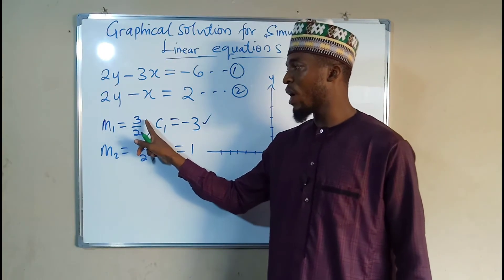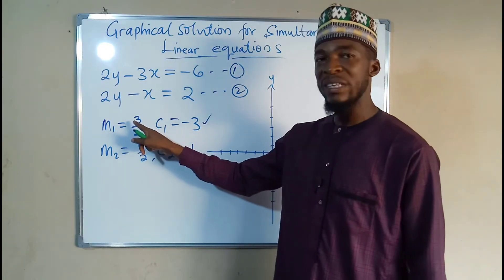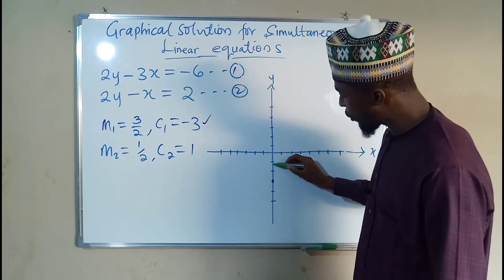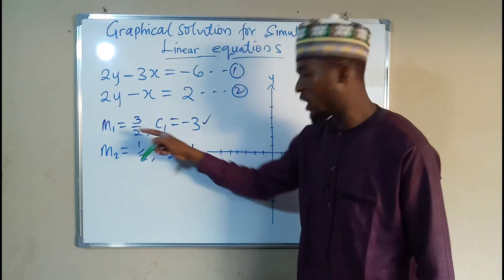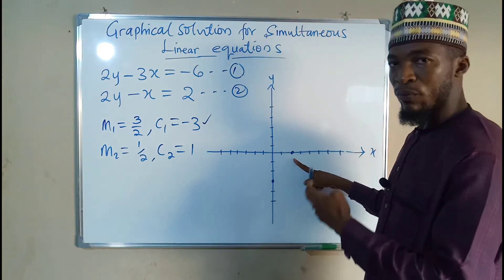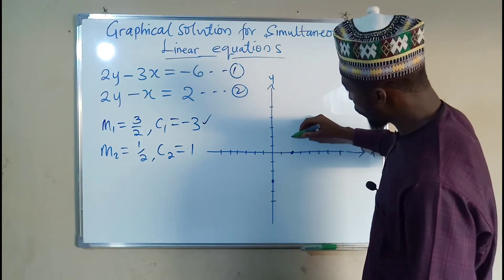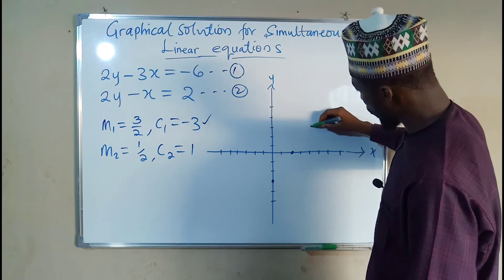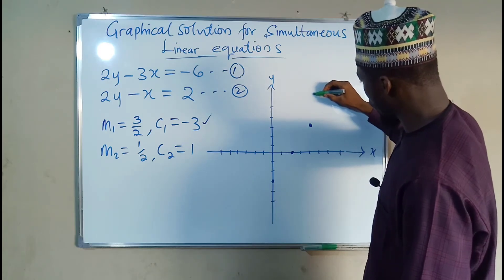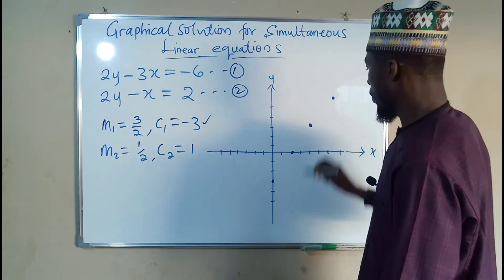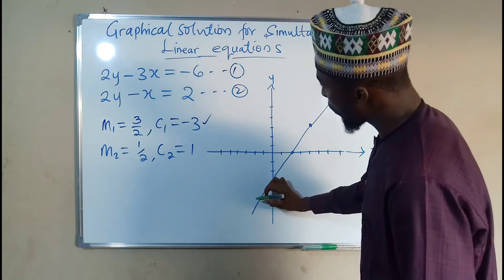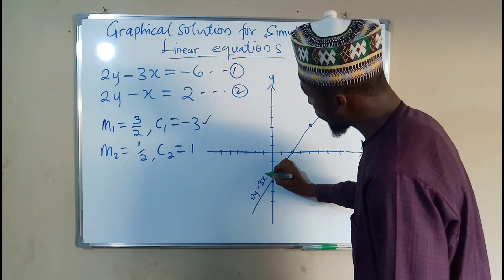Then our slope — rise over run — is 3 over 2, meaning we go up 3 units along the y-axis (if positive) or down (if negative). So we move up 3 and then to the right 2 times to get another point. We repeat this from the new point: up 3, right 2, and again up 3, right 2, plotting each successive point. My hand is not that accurate, but this is the graph of 2y minus 3x equals negative 6.